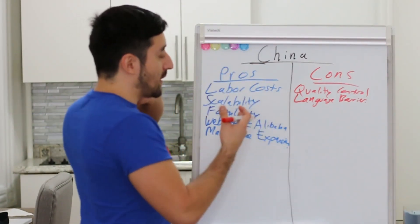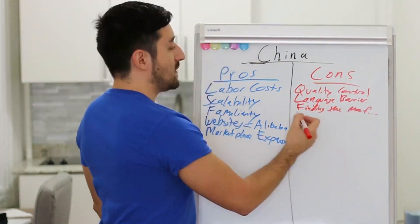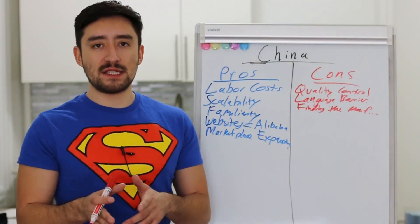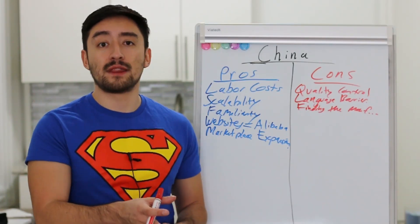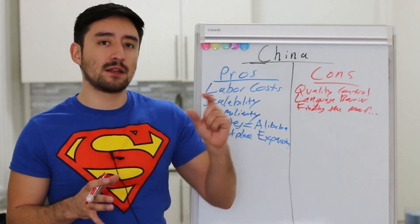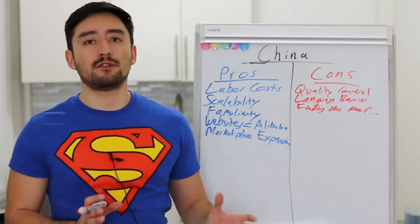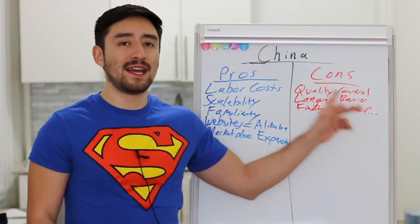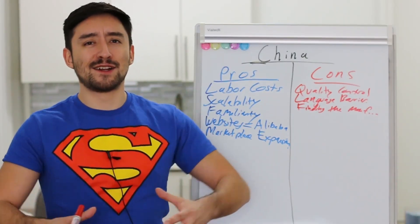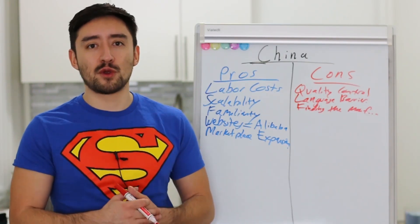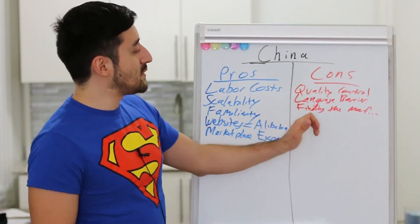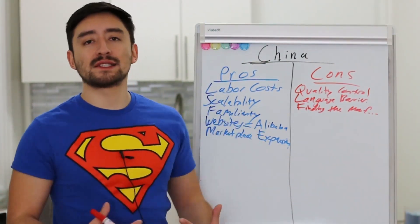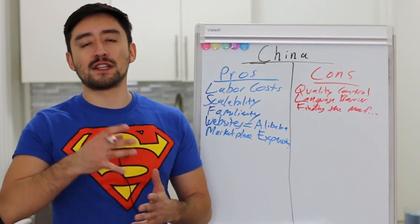Another big challenge with Chinese manufacturing is actually finding the manufacturer. This is a problem because there are many middlemen out there. If you go on a website like Alibaba, you're not always guaranteed you're dealing with the actual manufacturer — you could be dealing with a middleman making a little money between you and the real factory. That means you're paying more than you should. Finding a good quality manufacturer in China is almost like an investment — it's literally a trade secret for your business, and you have to do a lot of vetting.